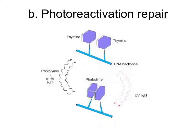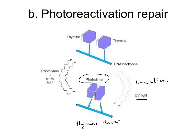UV light can cause dimerization of thymine, resulting in a photodiamer — also called a thymine dimer — which is covalent bonding between two thymine bases induced by UV light. This is a mutation event. Luckily, UV light also contains white light which induces production of an enzyme called photoliase, whose job is to repair thymine dimers. So the light energy both induces mutation and turns on a repair enzyme. We've evolved over thousands of years of evolutionary history to protect ourselves from thymine dimers.